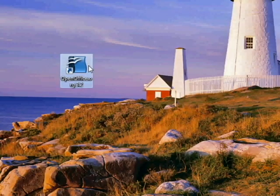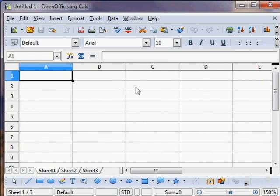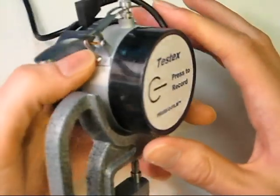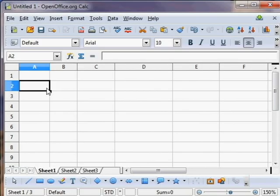Now, open a spreadsheet like Microsoft Excel or OpenOffice Calc and click one of the cells. Start the upload by firmly pressing the same button you used for recording. Your most recent measurements will populate the spreadsheet.